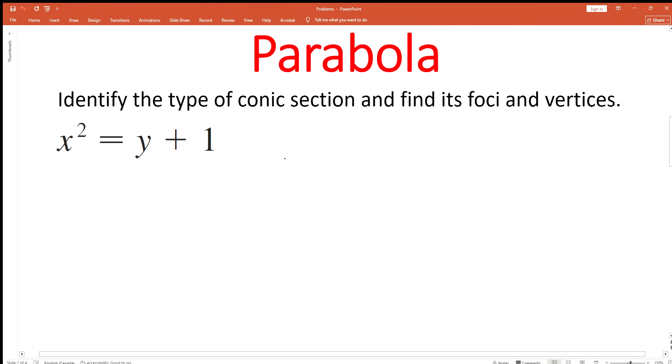As per the problem, identify the type of conic section and find its foci and vertices. We have to identify the conic section from the given equation. The given equation is x² = y + 1. In this equation, the square is on x. There is no square on y. That means this equation represents a parabola.